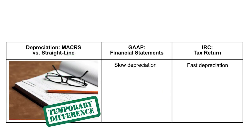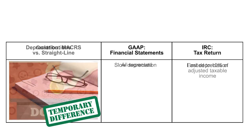Depreciation: we have MACRS versus straight-line. The financials will typically use slower straight-line depreciation, while on the tax return you'll use MACRS — Modified Accelerated Cost Recovery System — so it's going a lot faster. They'll agree on ultimately the total amount; it's just the timing of it that creates an M1 adjustment.